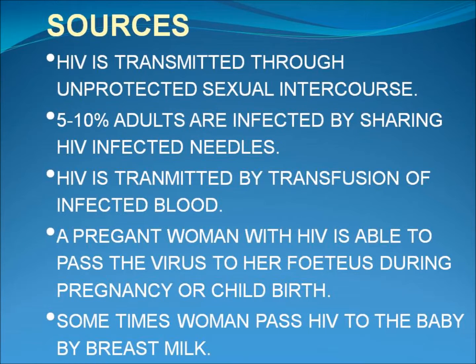Sources of HIV: HIV is transmitted through unprotected sexual intercourse. 5 to 10 percent of adults are infected by sharing HIV-infected needles. HIV is also transmitted by transfusion of infected blood. A pregnant woman with HIV can pass the virus to her fetus during pregnancy or childbirth, and sometimes women pass HIV to the baby through breast milk.